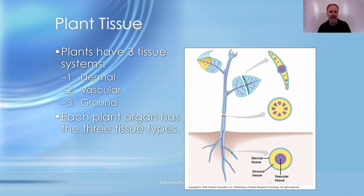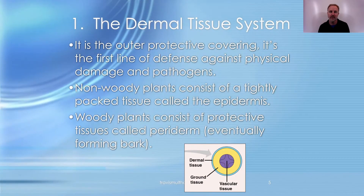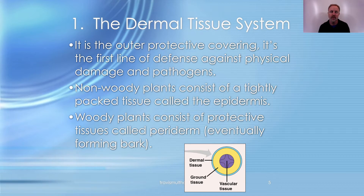Plants have three basic tissue systems: dermal, vascular, and ground. Each plant organ has all three types of tissues, just arranged a little differently. The dermal tissue is the outer skin of the plant. It protects against water loss, physical damage, and pathogens.